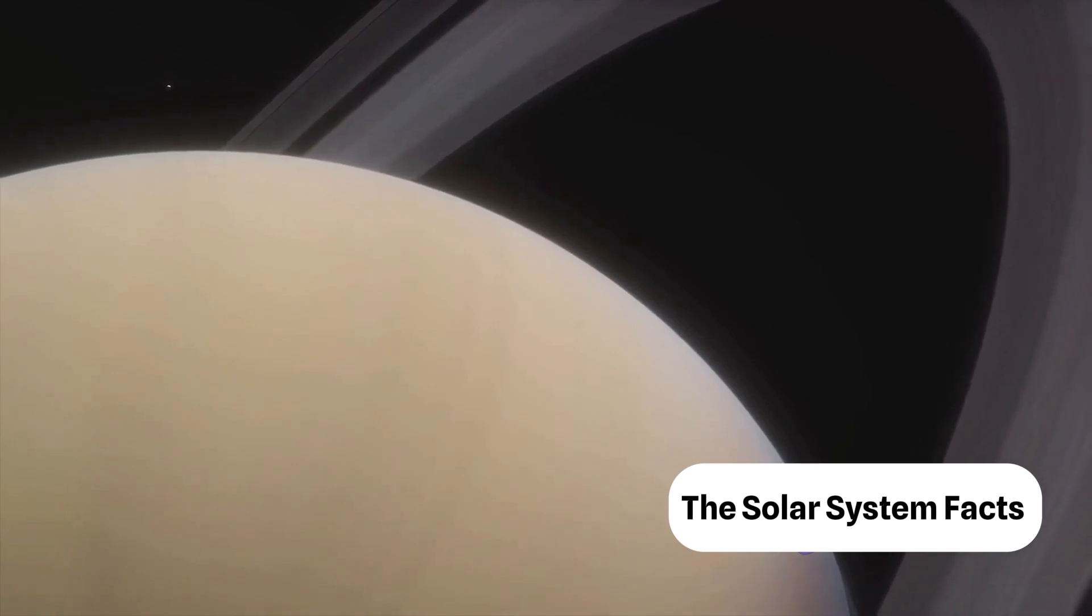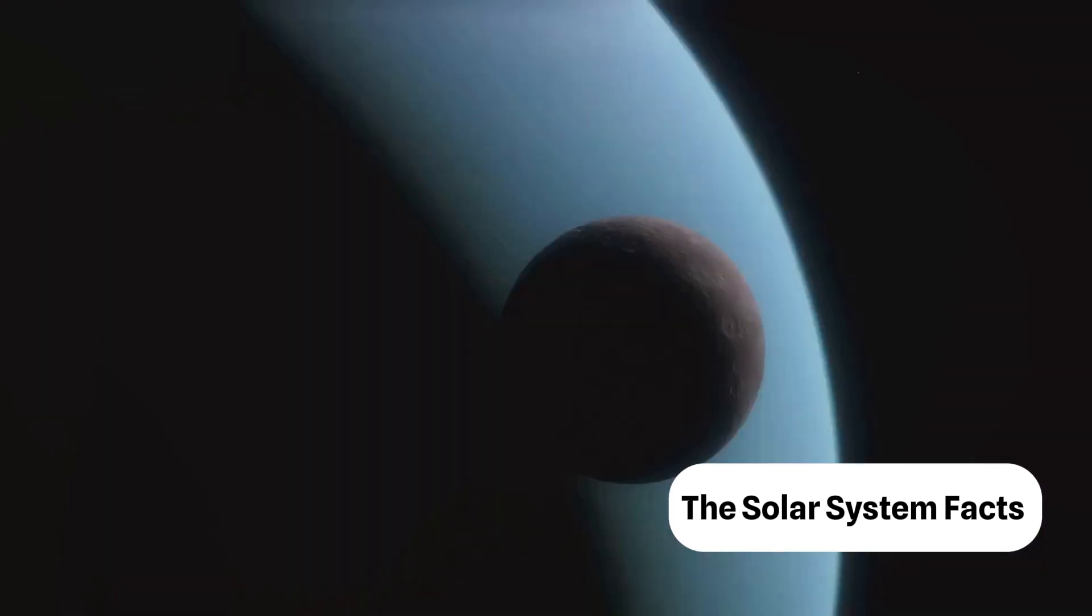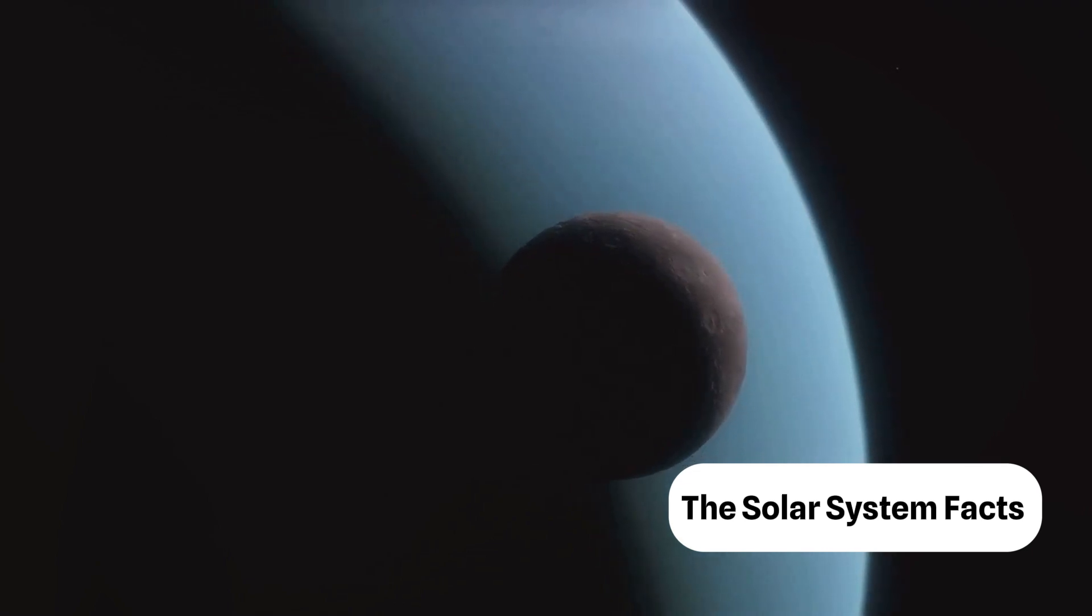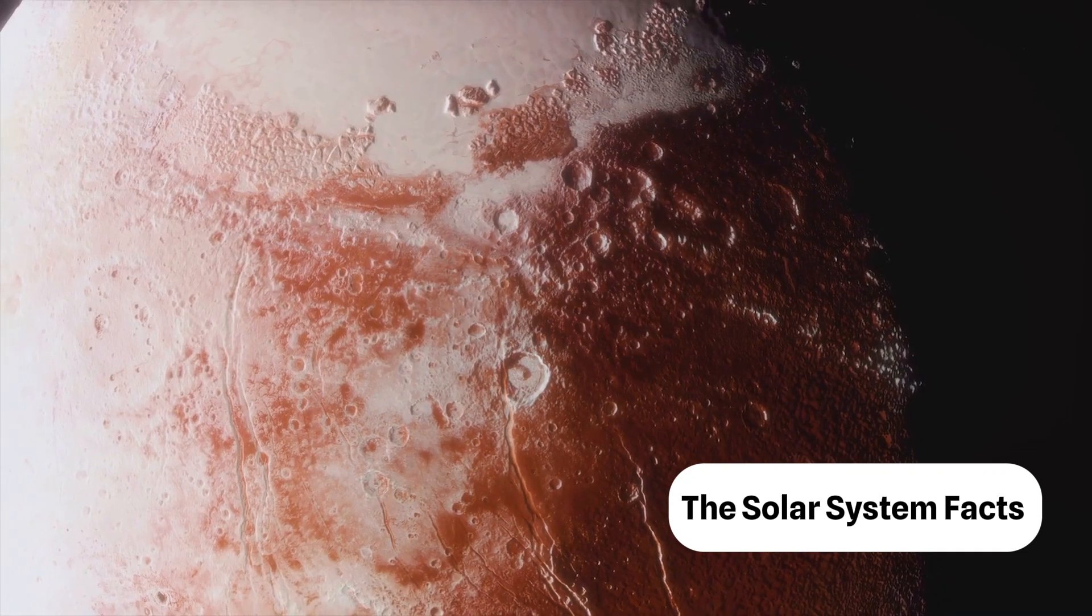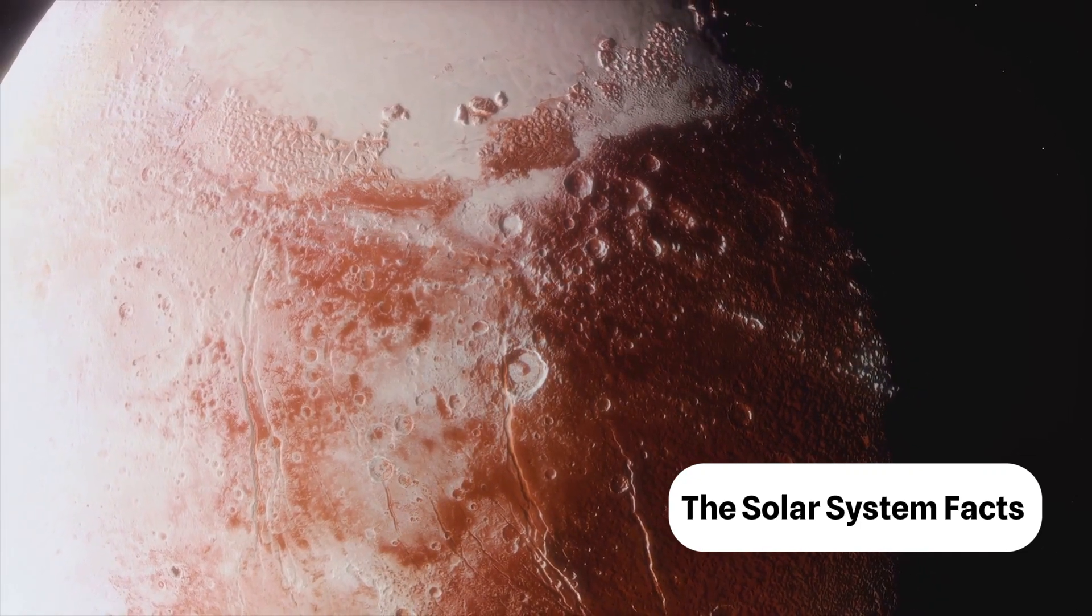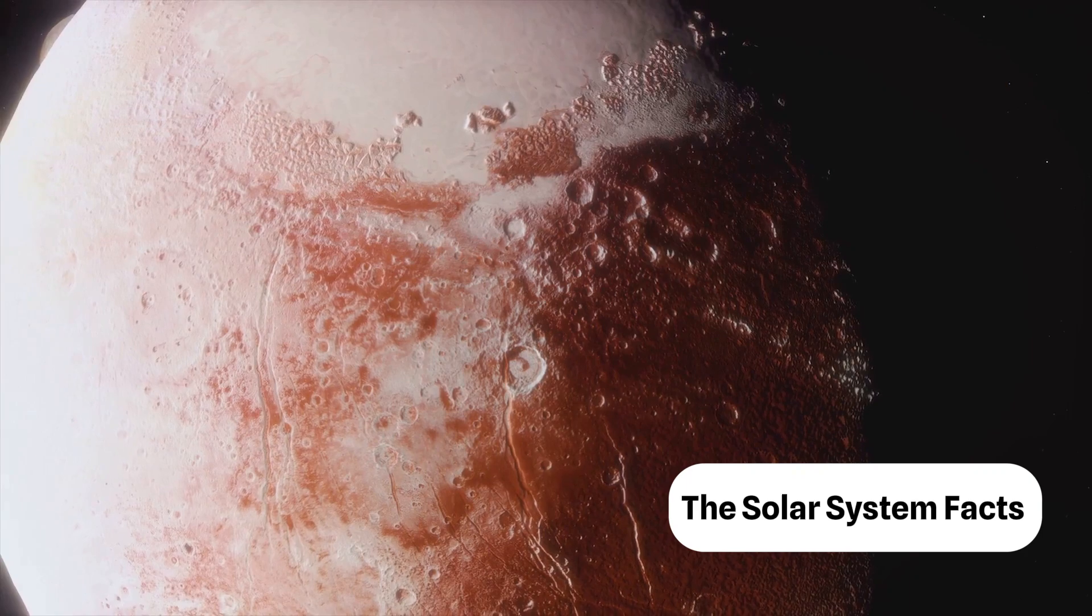Moving further out we come across Uranus and Neptune, the ice giants. These distant worlds are known for their blue hues and extreme weather, with winds reaching unimaginable speeds. At the edge of our solar system we find the Kuiper belt and the dwarf planet Pluto. Once considered the ninth planet, Pluto stands as a gatekeeper to the outer limits of our solar system.